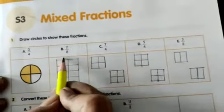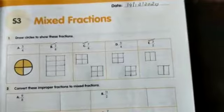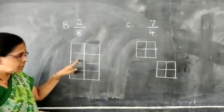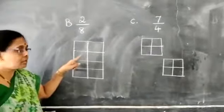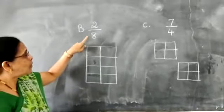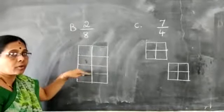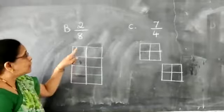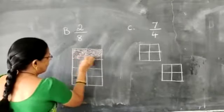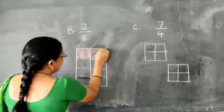Next, part B: 2/8. You have to divide into 8 equal boxes. How many parts do you have to shade? 2 boxes. This is 2/8.